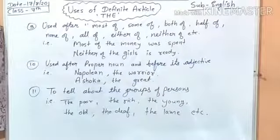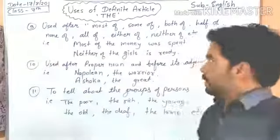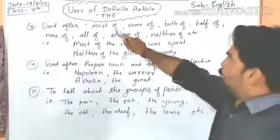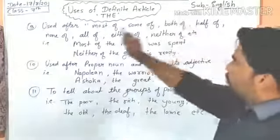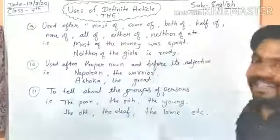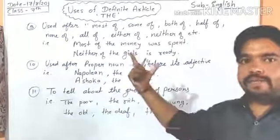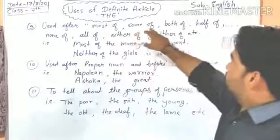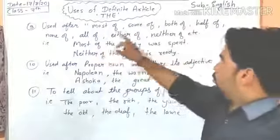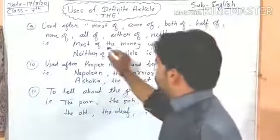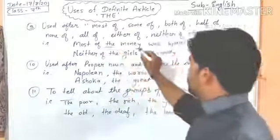The ninth use: 'the' is used after phrases like 'most of,' 'some of,' 'both of,' 'half of,' 'none of,' 'all of,' 'either of,' 'neither of,' and many more. For example: 'Most of the money was spent,' 'Neither of the girls is ready.' So after these phrases, 'the' follows.